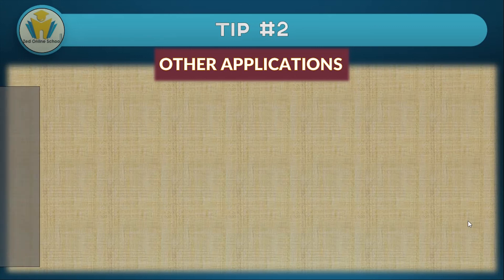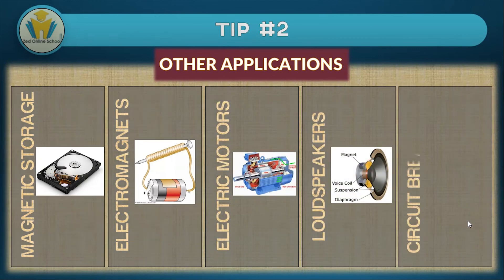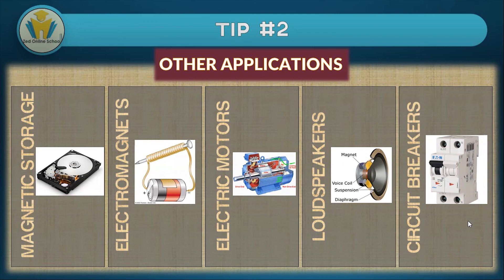Here are some additional applications of magnetism. Magnetic storage — hard drives in computers use magnetism to store information, and magnetic tapes also use this principle. Electromagnets are used in relay switches and electric bells. Electric motors are another application and will be covered in other topics. Loudspeakers use magnetism to operate, and there are also circuit breakers which use magnetism.